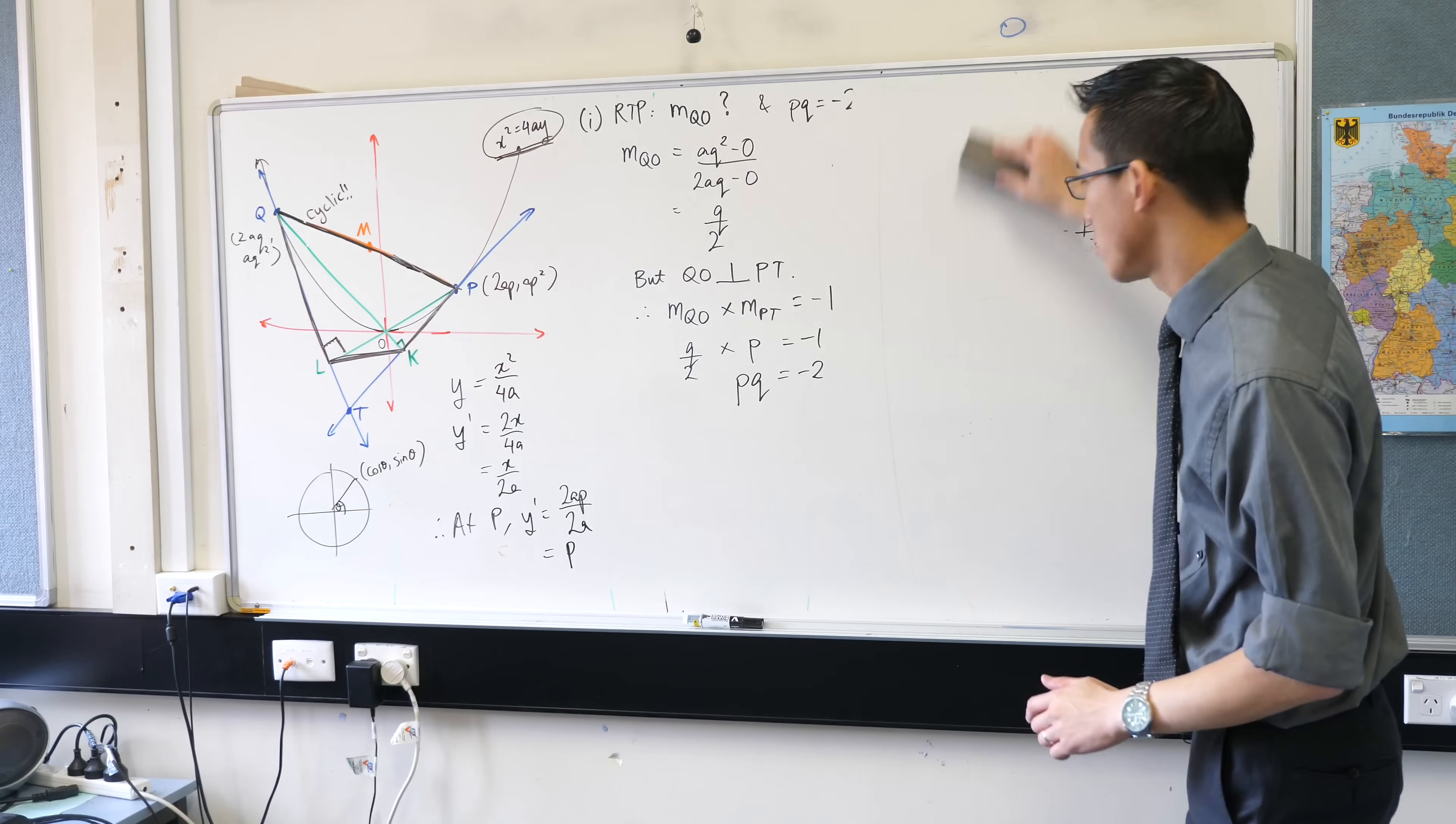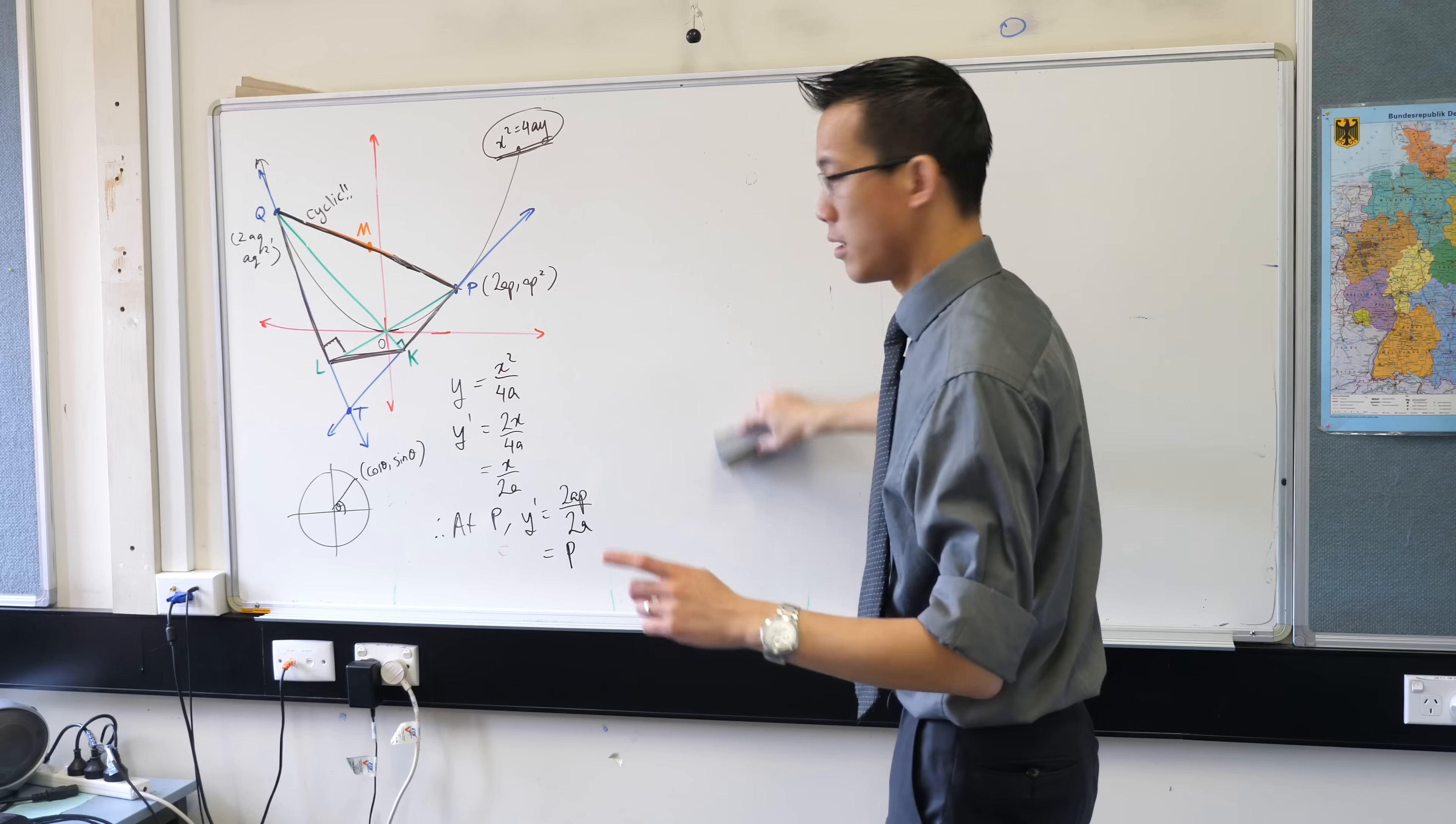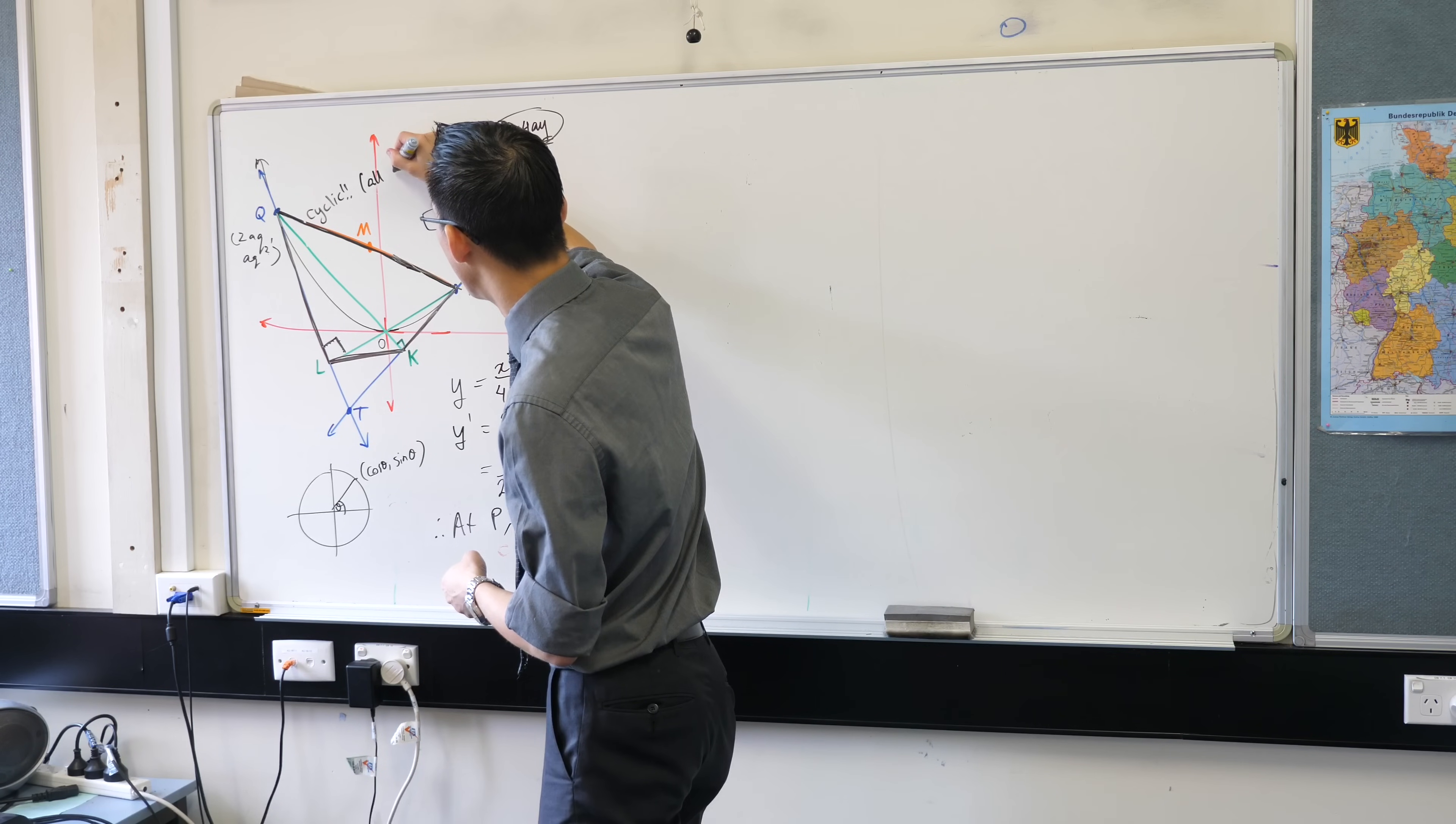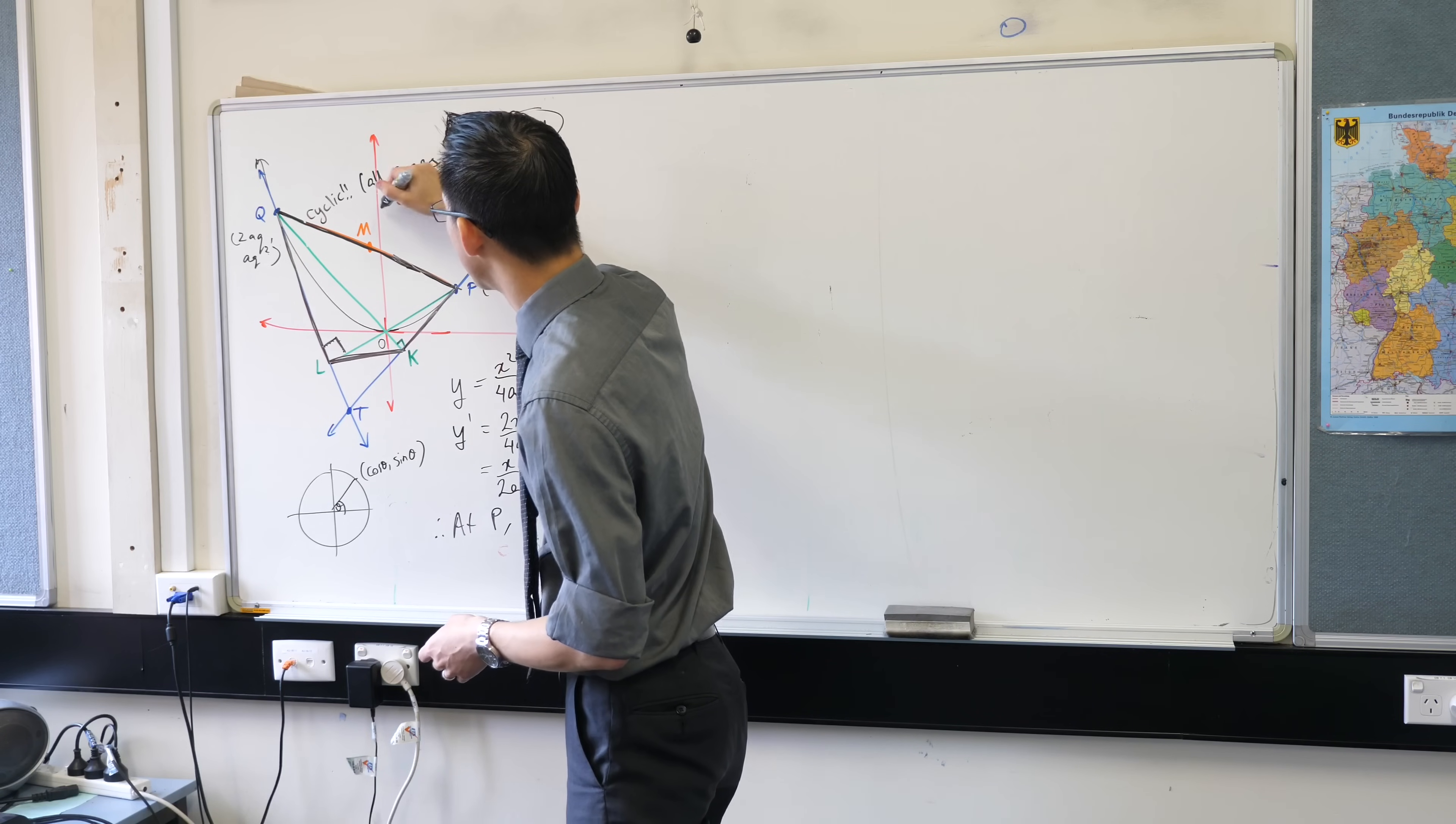What's the definition of a cyclic quadrilateral? Very good. If you have a cyclic quadrilateral all points, all corners, vertices is the technical word but anyway all corners are on the circumference of a circle.